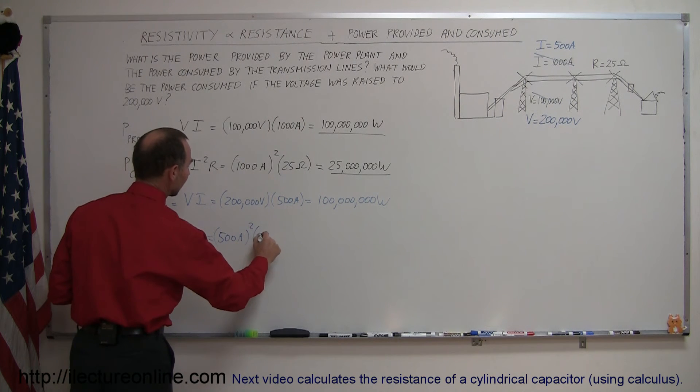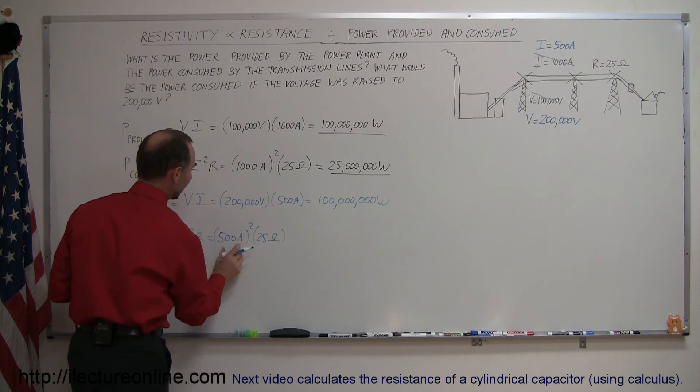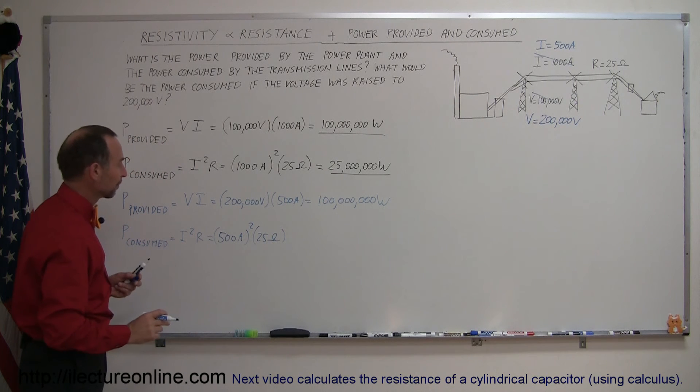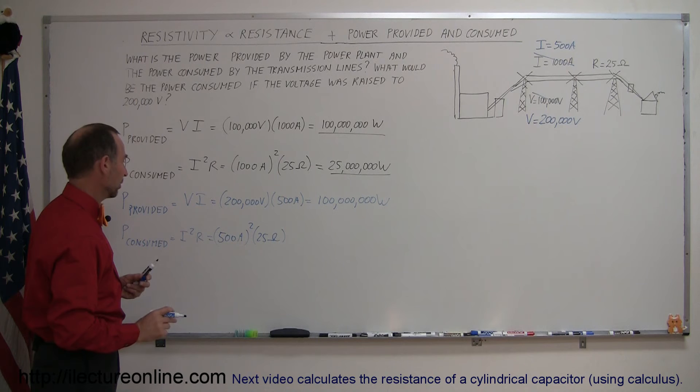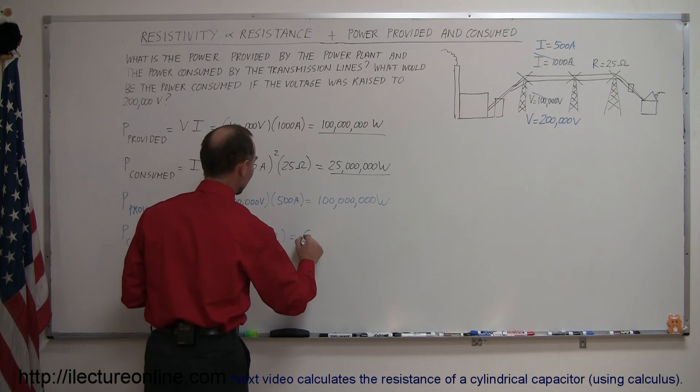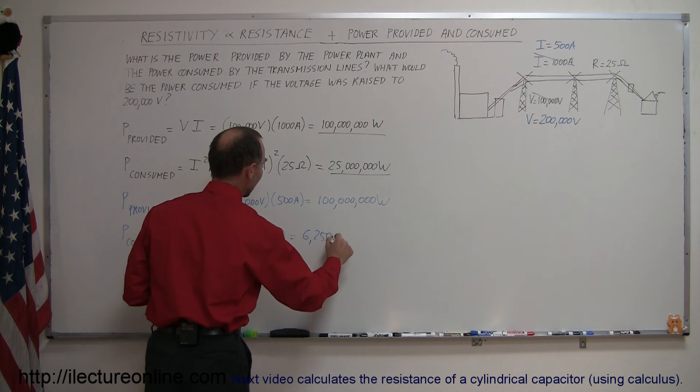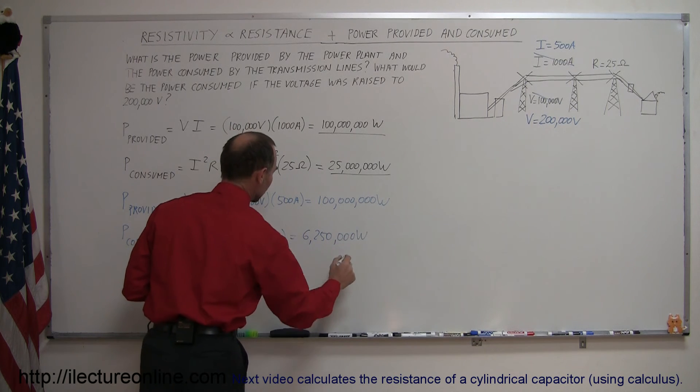The resistance still would be the same, 25 ohms, and 500 squared, that would be, let's see here, 500 squared would be 250,000 times 25, that would now be 6 million 250,000 watts of power consumed.